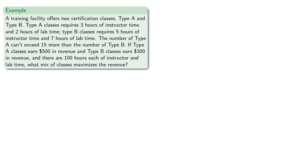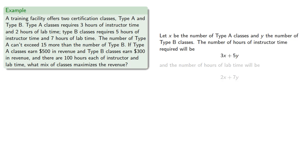If the two classes bring in different amounts of revenue and we have a constraint on the amount of instructor and lab time, we can try to find the number of classes to offer to maximize the revenue. So let X be the number of type A classes and Y be the number of type B classes. The number of hours of instructor time required will be, and the number of hours of lab time will be.